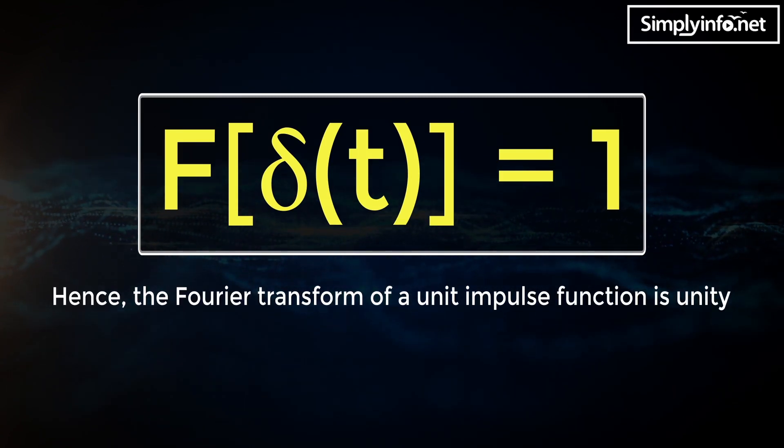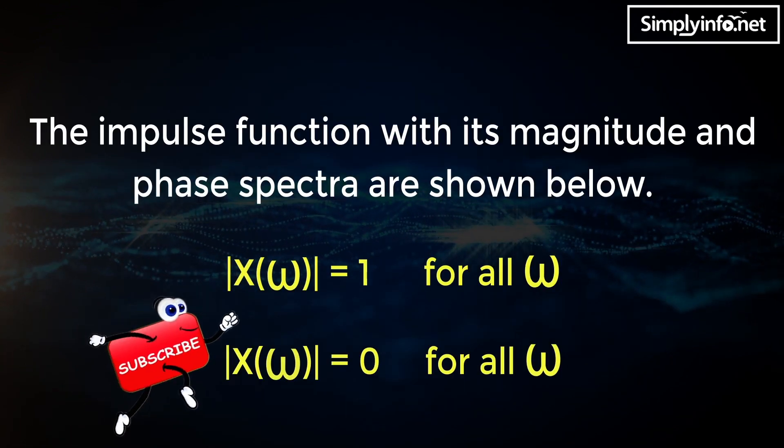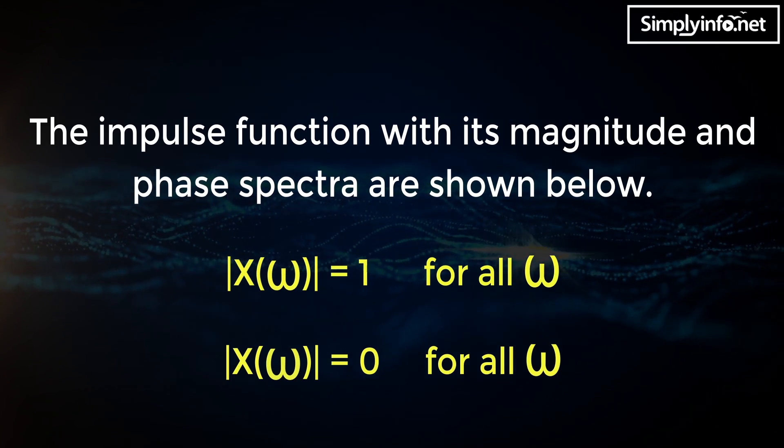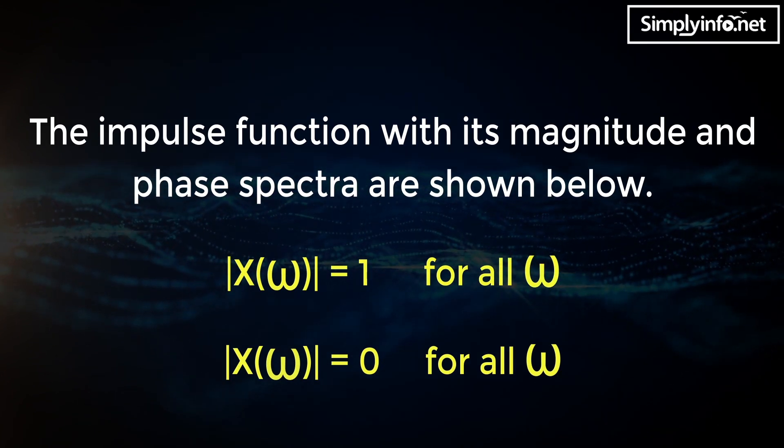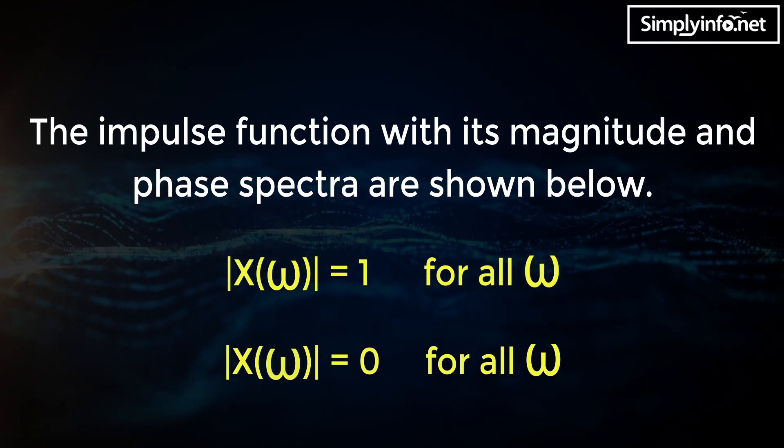The impulse function with its magnitude and phase spectra are shown below. The magnitude spectra of X of omega equals 1 for all omega.